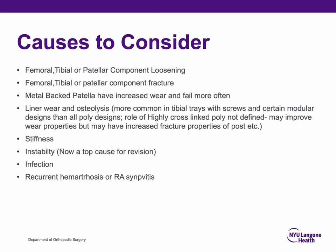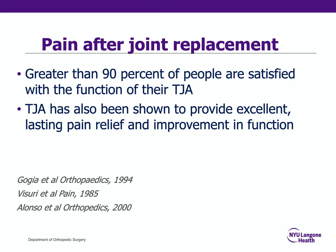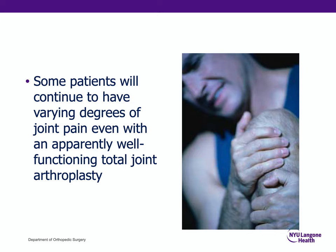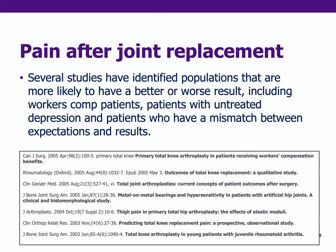Fortunately, more than 90 percent of people are satisfied with their function after total joint arthroplasty, and it has provided excellent, lasting pain relief and improvement in function. However, some patients will continue to have varying degrees of joint pain even with apparently well-functioning total joint arthroplasties. Several studies have identified populations more likely to have worse results, including workers' compensation patients, patients with untreated depression, or patients with a mismatch between expectations and results.